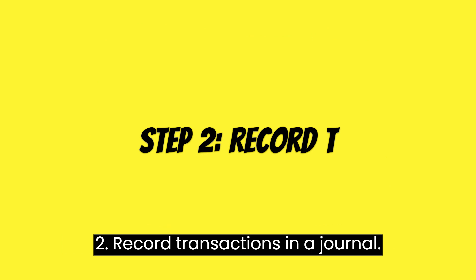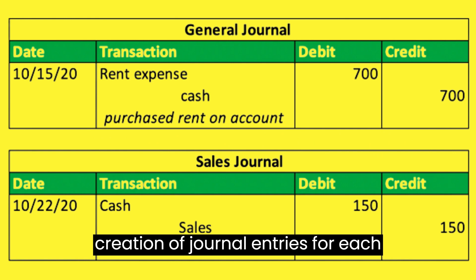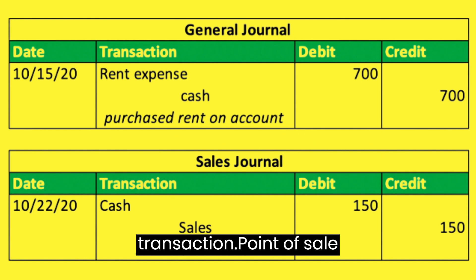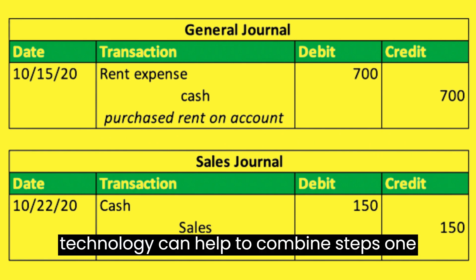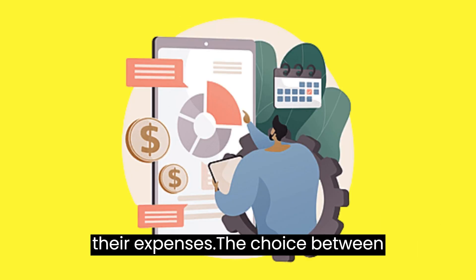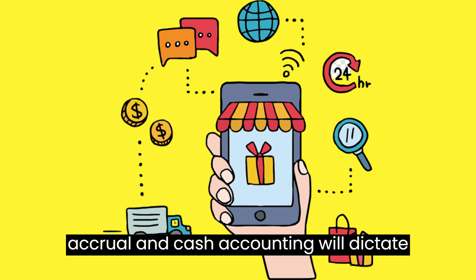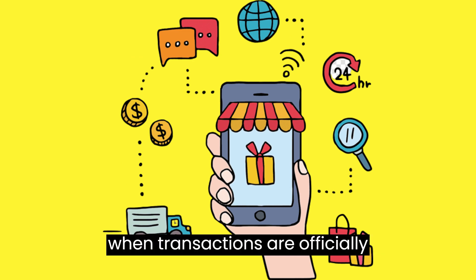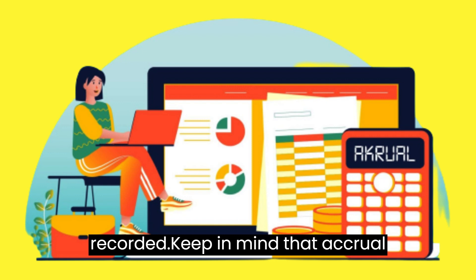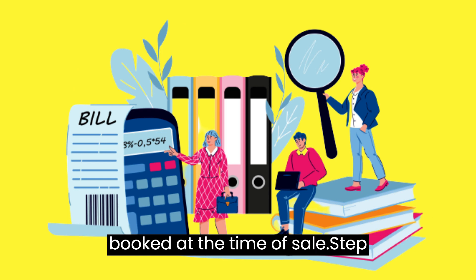Step 2: Record transactions in a journal. The second step in the cycle is the creation of journal entries for each transaction. Point-of-sale technology can help to combine steps 1 and 2, but companies must also track their expenses. The choice between accrual and cash accounting will dictate when transactions are officially recorded. Keep in mind that accrual accounting requires the matching of revenues with expenses, so both must be booked at the time of sale.